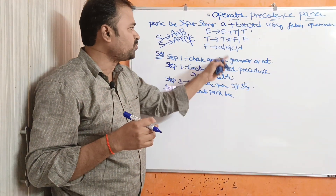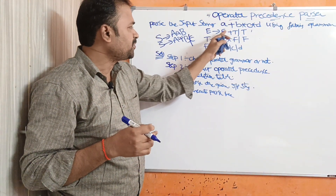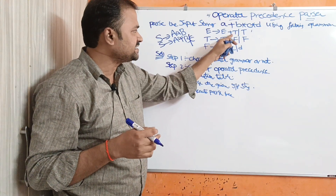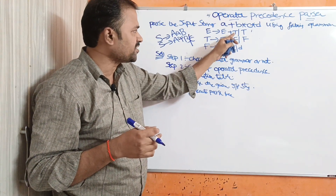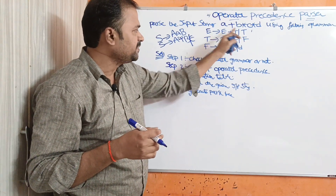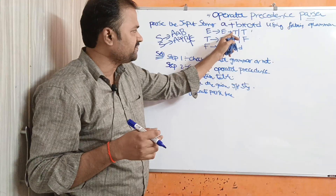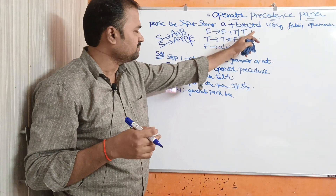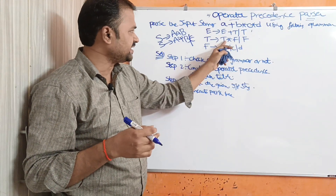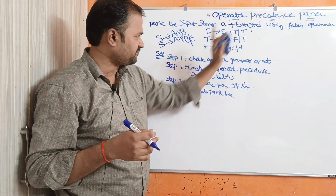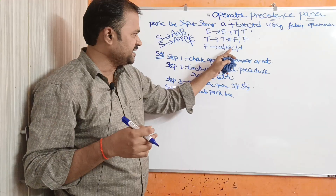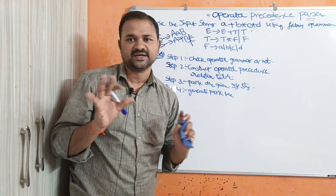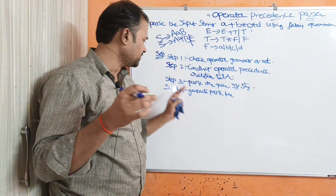Here there is no problem. E produces E plus T or T — adjacent variables are not present because between E and T we have plus. No epsilon is present. T star F, and F produces A, B, C, D. So this is an operator grammar.